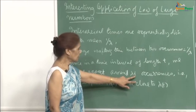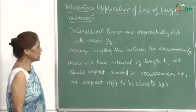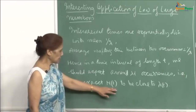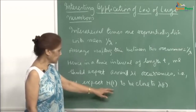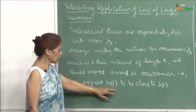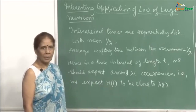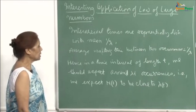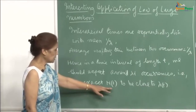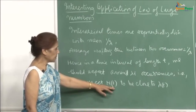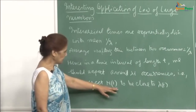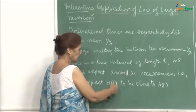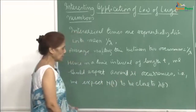In time interval t, you would expect on the average λt occurrences. Since our notation for the Poisson process for the number of arrivals up to time t is N(t), we expect that N(t) and λt should be close, and this is what the weak law of large numbers and strong law of large numbers is all about. We will show that the ratio N(t)/t would be close to λ, because if you want N(t) to be close to λt, then N(t)/t should be close to λ. This is the whole idea.